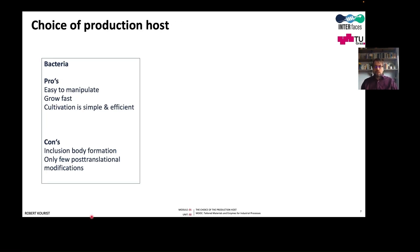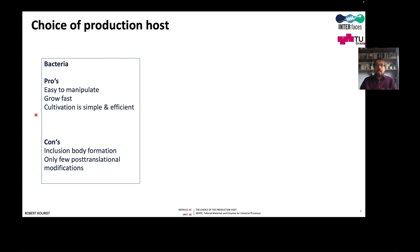This brings us to the choice of the production host. Bacteria are frequently used both for research and production — they are easy to manipulate, they grow fast, and cultivation is simple and efficient. There are a few drawbacks: for some specific enzymes there is inclusion body formation. Disulfide-bond-containing enzymes are a challenge for production in bacteria — in some cases this can be solved, but in others it works with very low efficiency. Bacteria also offer few options for post-translational modifications.